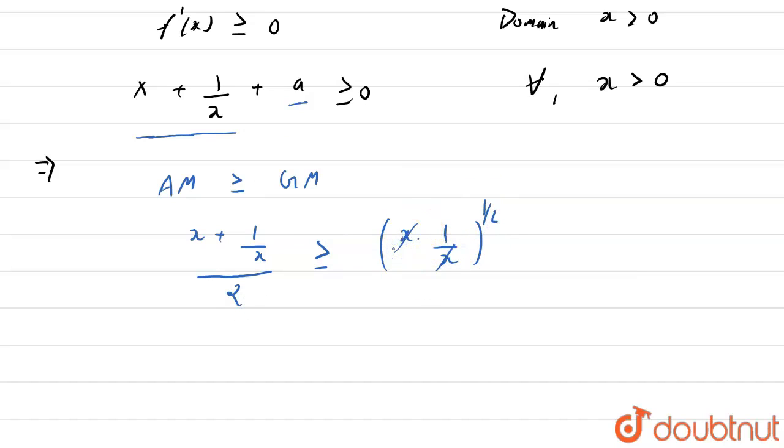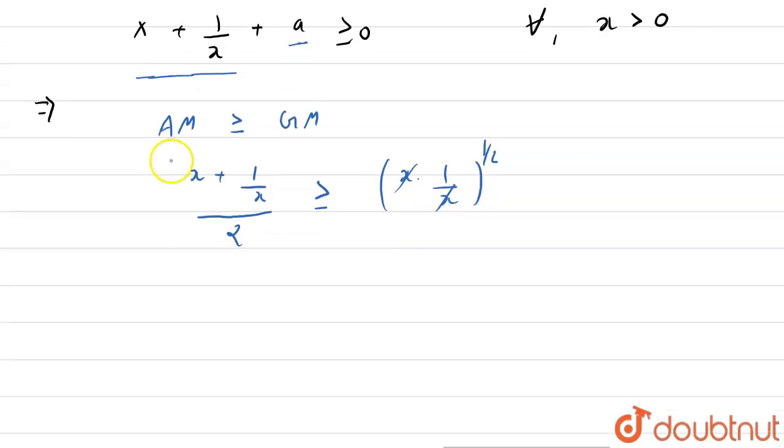and this comes to be 1, and 1 to the power 1 by 2 is 1, so it will give us x plus 1 upon x greater than or equal to 2. So we get the least value of this function as 2.